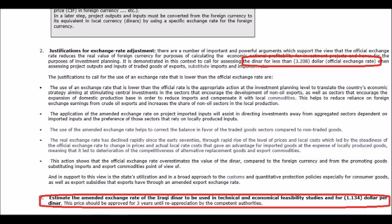Here on the website for the Ministry of Planning you will see this feasibility study. I've highlighted the two crucial lines in this study. One says — look toward the bottom — it says: 'estimate the amended exchange rate of the Iraqi dinar to be used in technical and economic feasibility studies for $1.13 per dinar. This price should be approved for three years.' This is where they get that $1.13 figure.